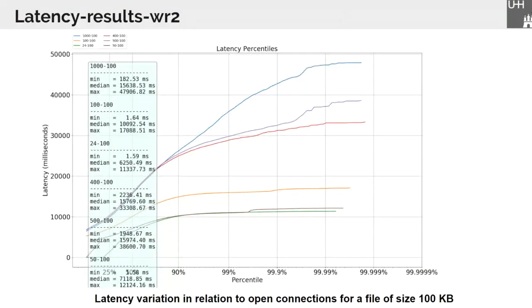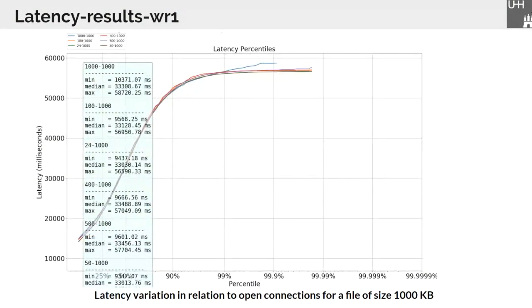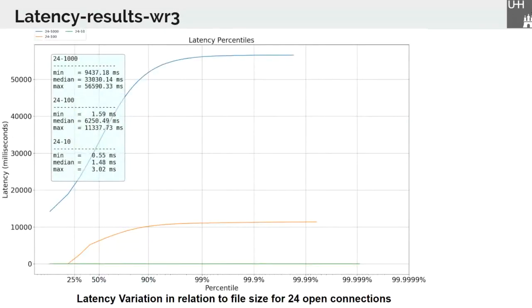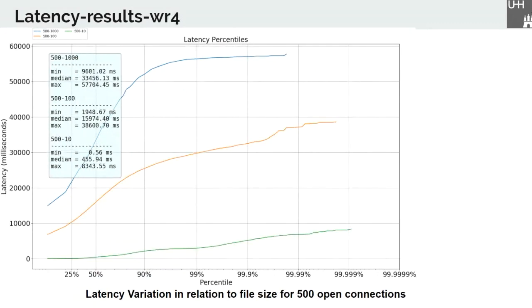Here we can see the latency variation in relation to open connections for a file of size 100 KB. And here is the same for a file of size 1000 KB. And here you can see the latency variation in relation to five or 500 open connections. As we notice, latency does not depend on the duration of the experiment. Moreover, it linearly increases with the number of open connections. The higher the number of connections that can open, the higher is the chance of congestion, leading to the activation of TCP flow control mechanism and eventual data retransmission, which in turn causes the increase in latency. This is especially true for small file sizes. However, when the file size grows beyond a certain limit, the number of connections will become irrelevant to the already high introduced latency.